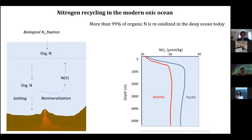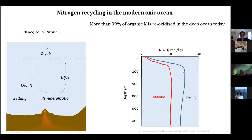Before discussing the rock record, I want to briefly remind you how nitrogen is recycled in the modern ocean. Today, most productivity happens in the surface ocean where nitrogen is fixed by the biosphere and some comes from land. This organic nitrogen eventually sinks into the deep ocean where the vast majority is remineralized back to nitrate — this defines the nitrate profiles in the modern ocean, with low values at the surface and replenishment at depth as organic particles are oxidized. It's a very efficient recycling mechanism stimulating a lot of biological productivity.